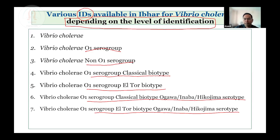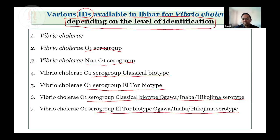If each lab does maximum effort and is able to identify the organism to the serotype level, that will be a very good outcome. I encourage all labs to procure anti-sera, which are available at low cost from ICMR/CSI. The biochemical tests are not exhaustive — they are easily available in most labs and can be performed. This concludes the section on Vibrio cholerae.